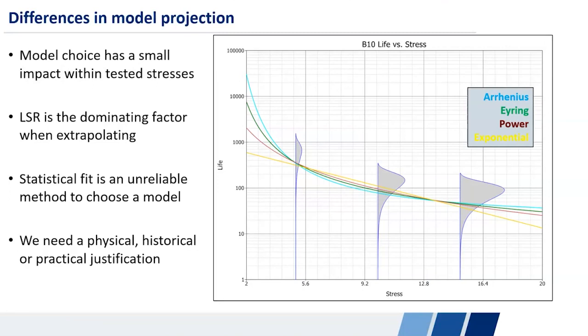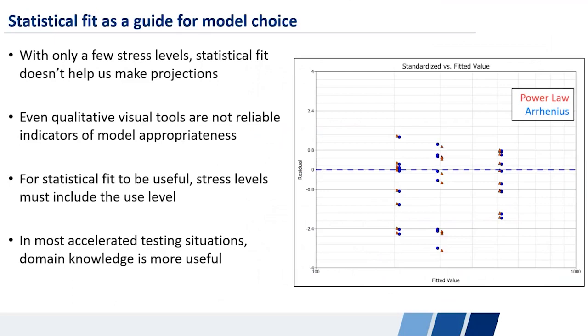However, because of that really small number of stress levels that we have, and because of that projection, that extrapolation outside of the tested range, statistical fit becomes a very unreliable method to choose a model. We generally rely on some sort of historical, some sort of practical or physics based justification for a life stress relationship. Just to further emphasize that point, even some of the more qualitative visual tools that you might use in a situation like this with small sample size, like residual plots.